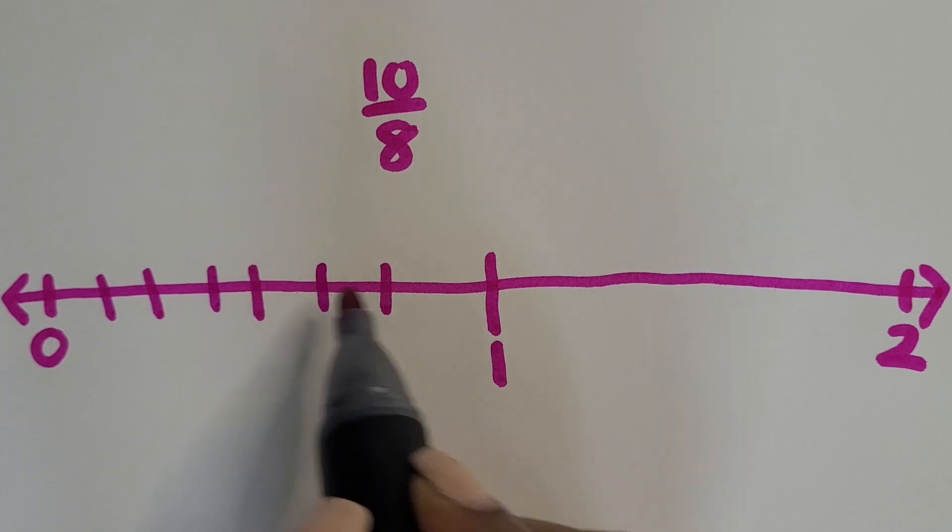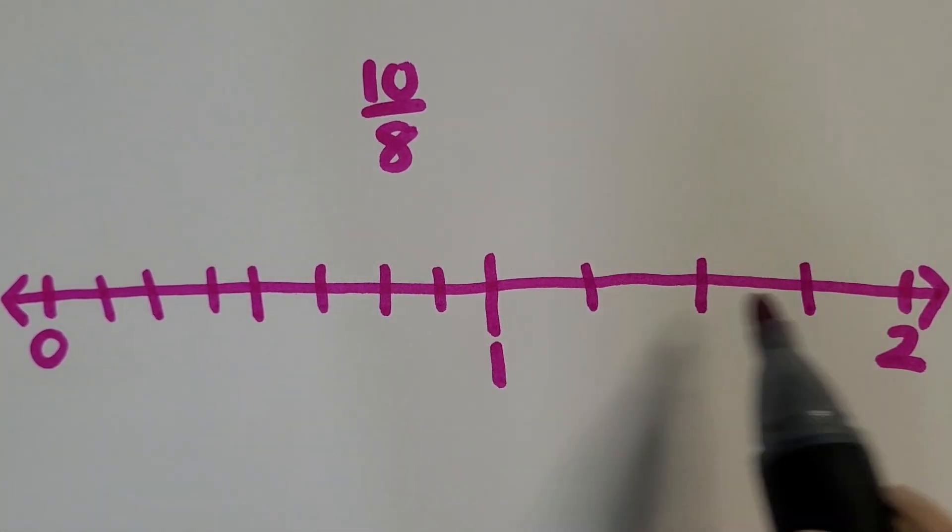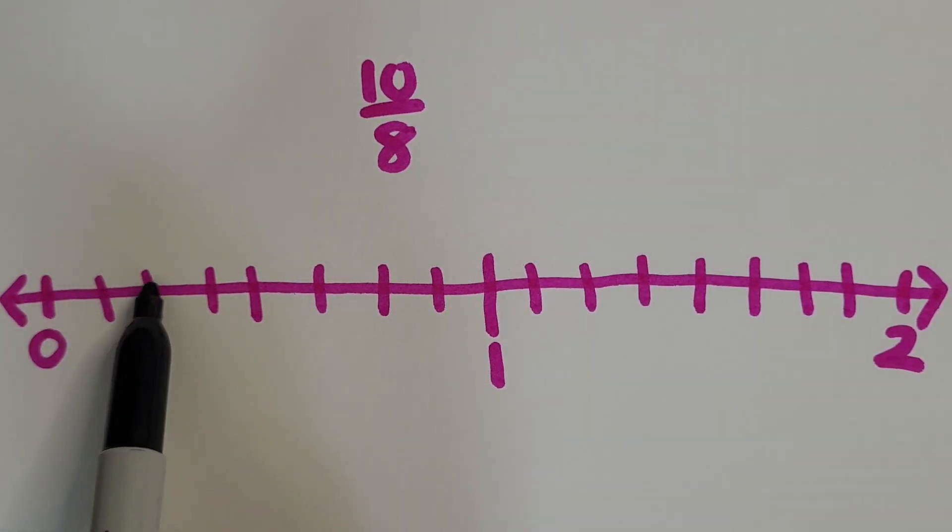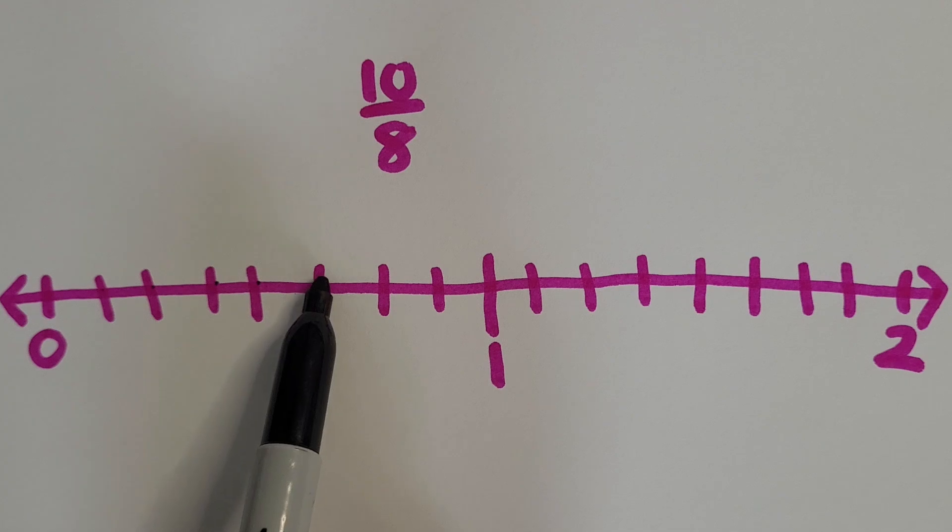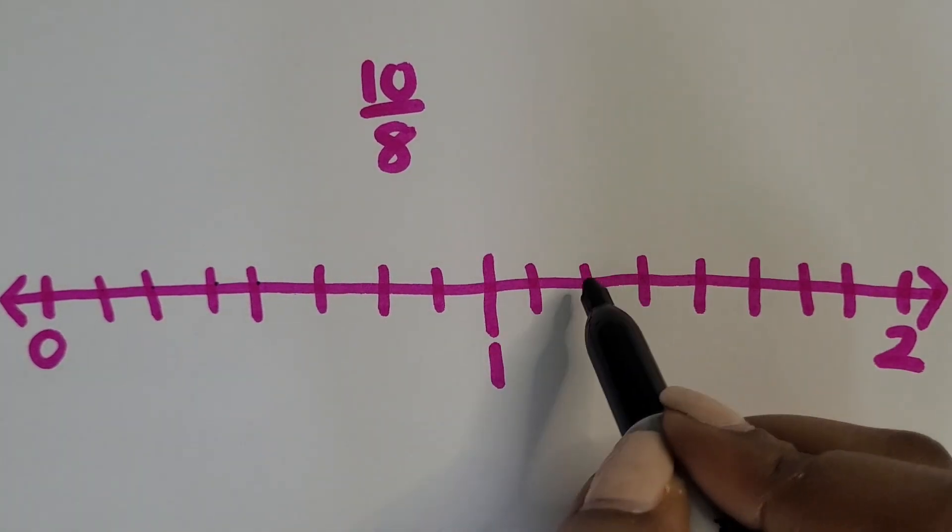Then we're going to partition each hole, each side, into eighths. You can start by partitioning it in half, then into fourths, then into eighths. And then we're just going to count out to 10 eighths and then go back and label them.